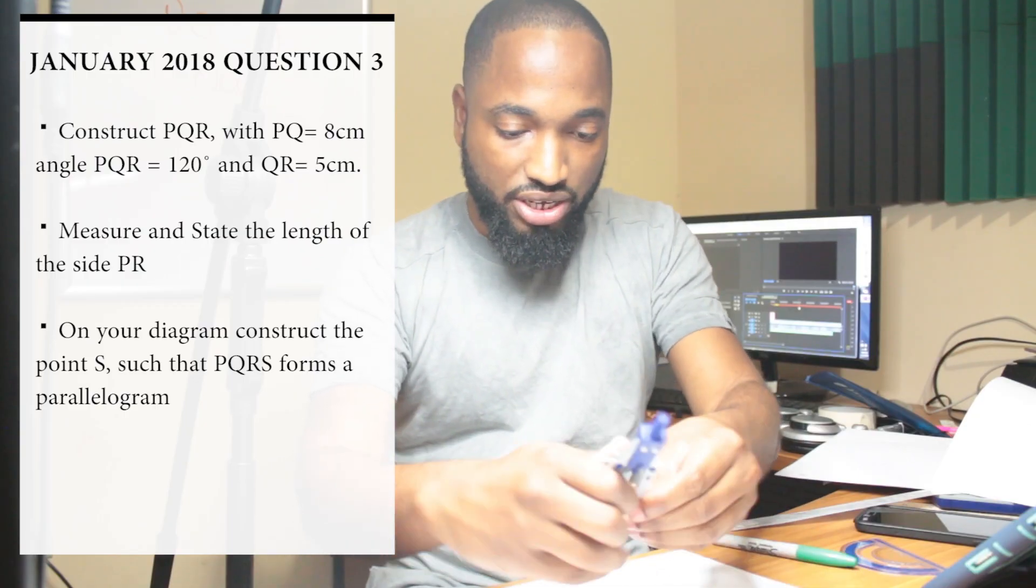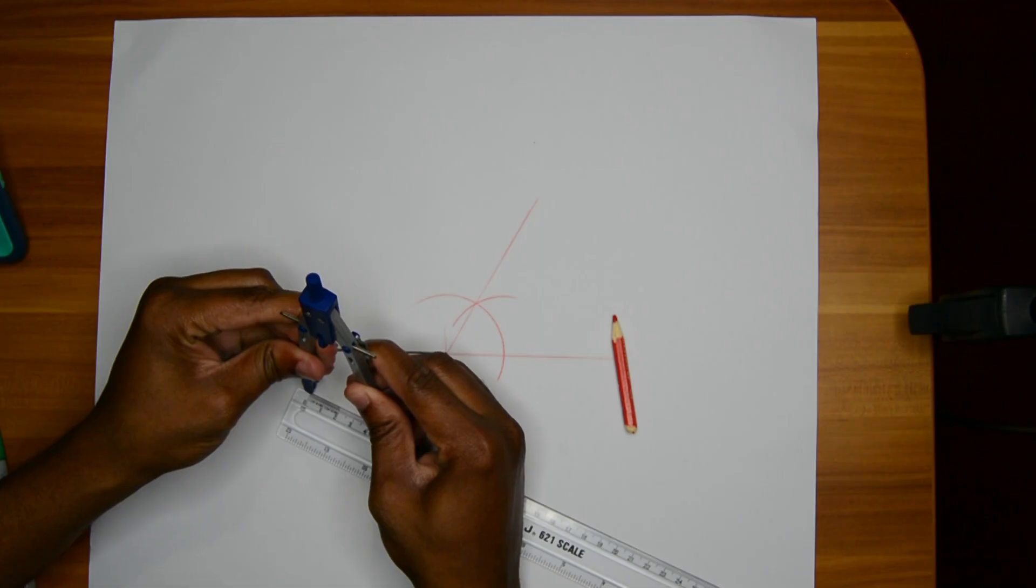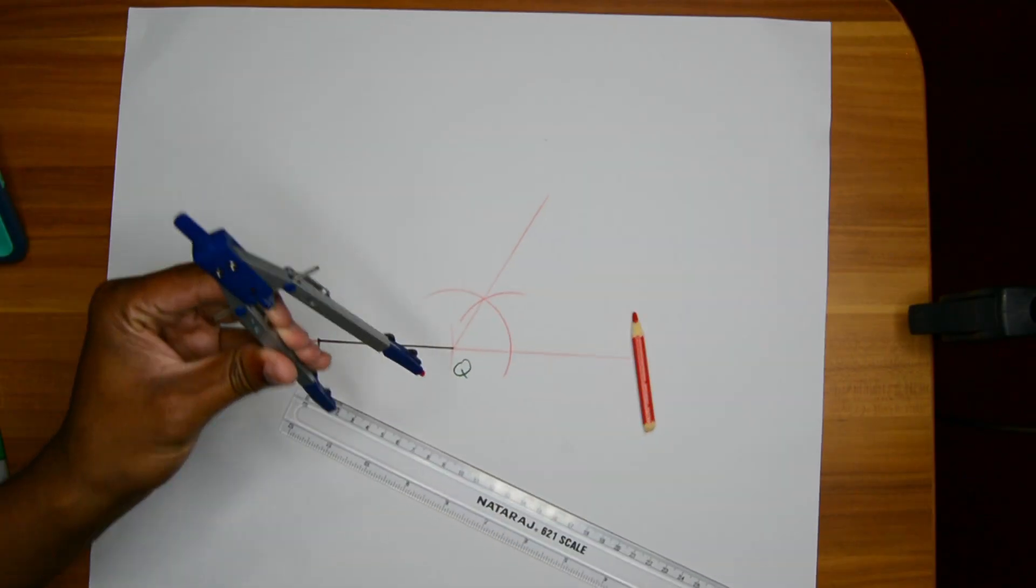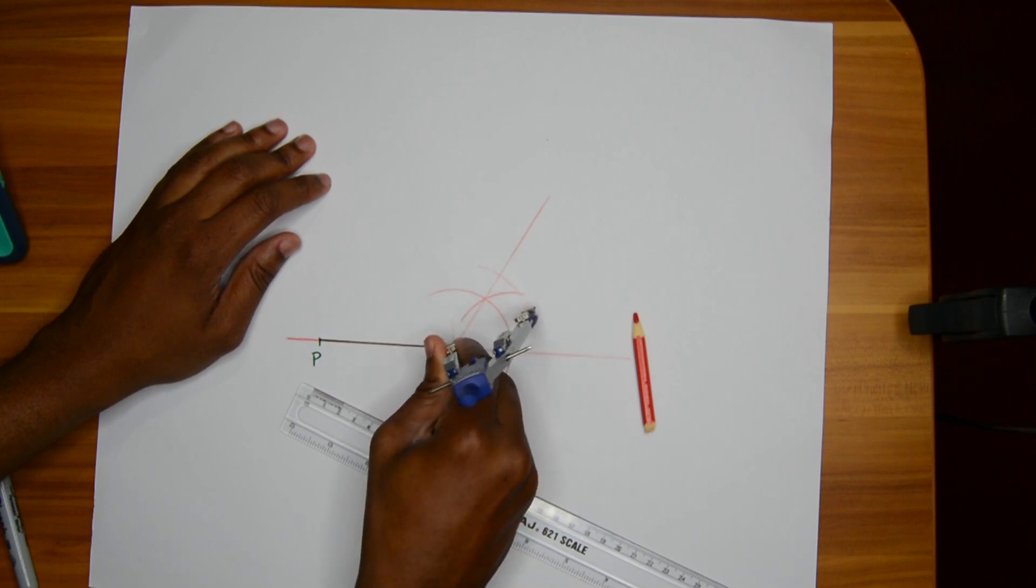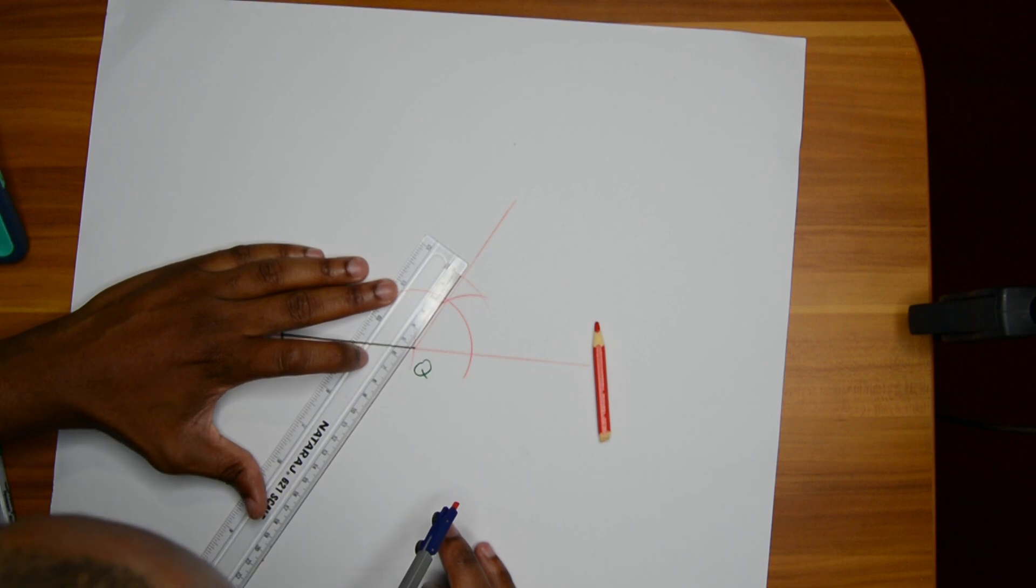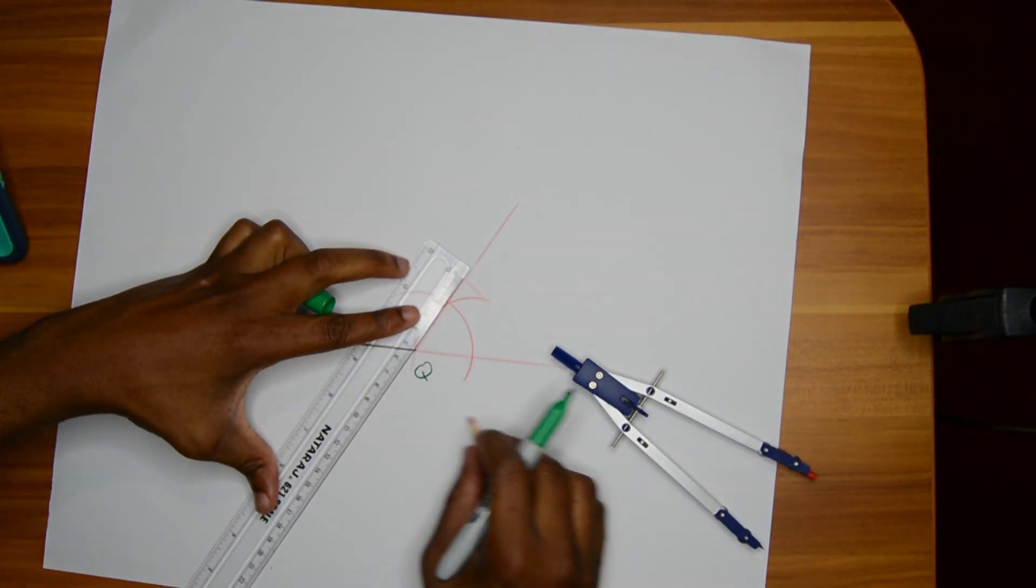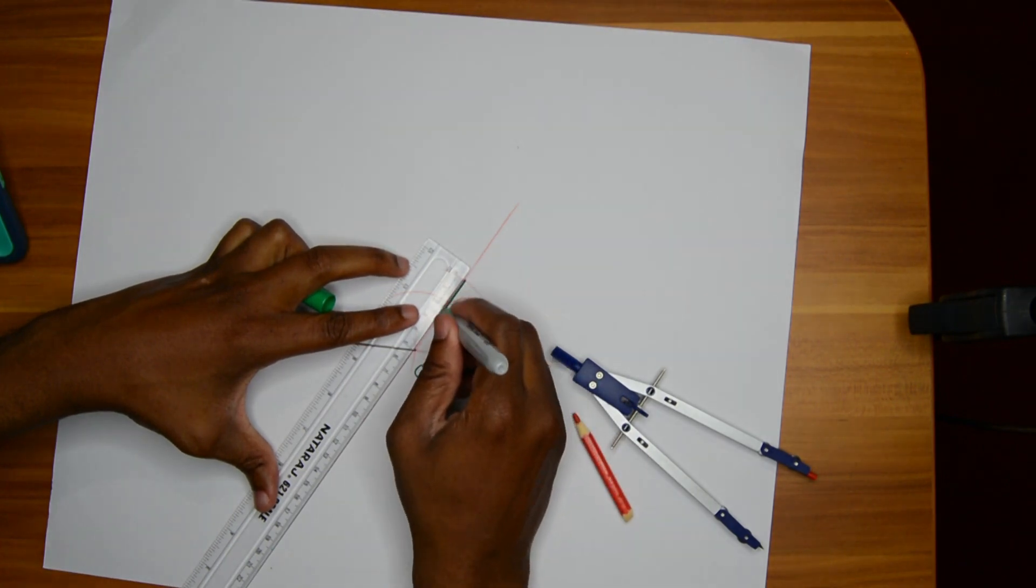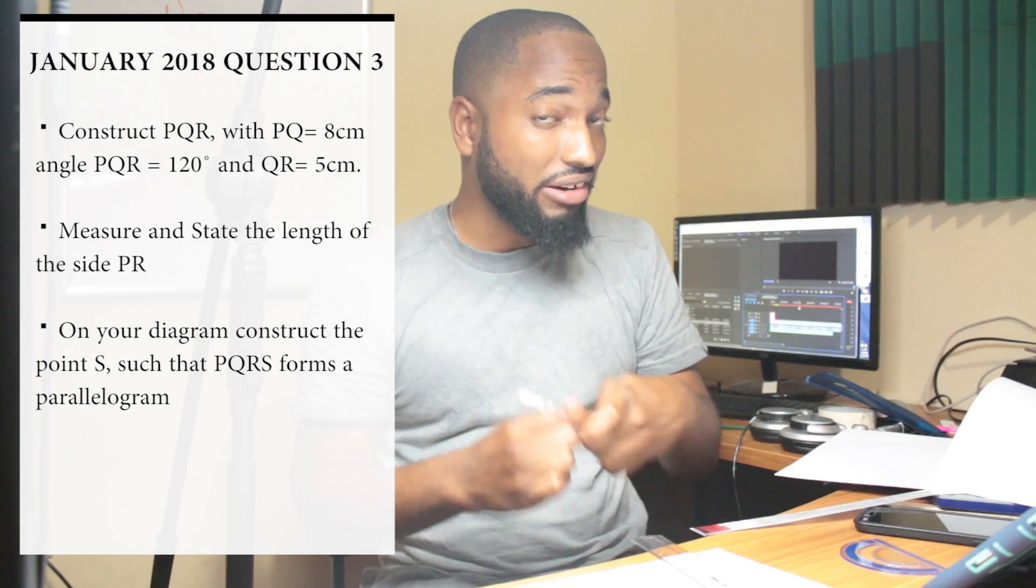Next I want 5 cm. We going good. Measure 5 cm. Make an arc where 5 cm should be. Verify that I didn't do anything wrong. Come with your dark pencil and darken them. PQR good to go, you're done.